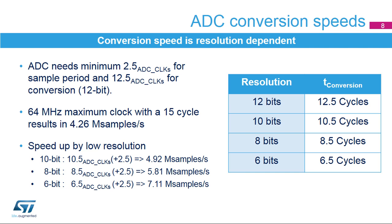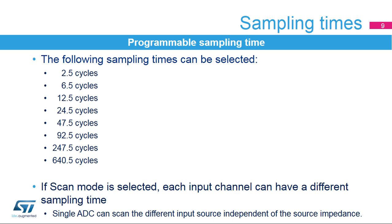For higher-speed sampling, it is possible to reduce the resolution down to 6 bits, then the sampling speed can go up to 7.11 megasamples per second. The sampling time can be programmed individually for each input channel. Longer sample times ensure that signals having a higher impedance are correctly converted.